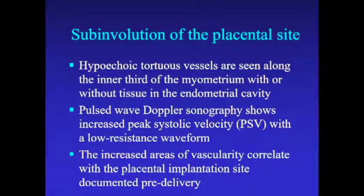Subinvolution of the placental site: the placenta needs to invade the myometrium — that's how it gets vascularity to the fetus and delivers oxygen and nutrients. You see hypoechoic tortuous vessels along the inner third of the myometrium without any tissue in the endometrial cavity. A lot of people end up calling this an AVM because they don't see a mass. But AVM should be thought of as something congenital. This is physiologic but persistent, so we need another term. Pulsed wave Doppler shows increased peak systolic velocity with a low-resistance waveform, and the vascularity correlates with placental implantation site documented pre-delivery.